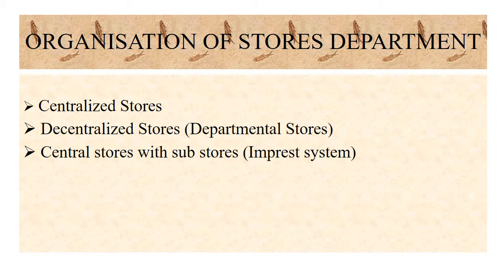The organization of the stores department depends upon the size and layout of the factory, the nature of the materials stored, and the frequency of purchases and issue of materials. There are three ways in which the organization of the stores department can be maintained: centralized stores, decentralized stores (departmental stores), and central stores with sub-stores, also known as the impressed system.